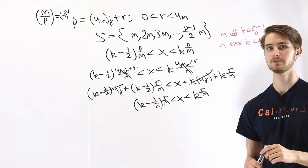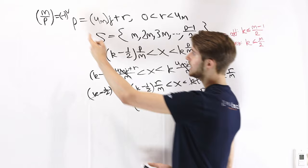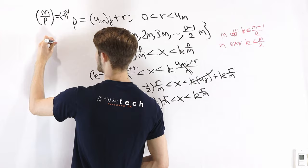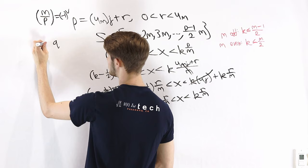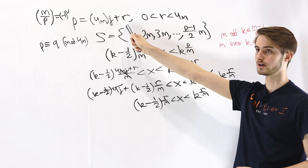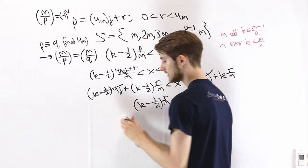If two different primes p and q have the same remainder when divided by 4m — that is, p ≡ q mod 4m — then they have the same value of r, so the Legendre symbol (m/p) equals (m/q). Both numbers give the same result for whether m is a quadratic residue. That is our first lemma.